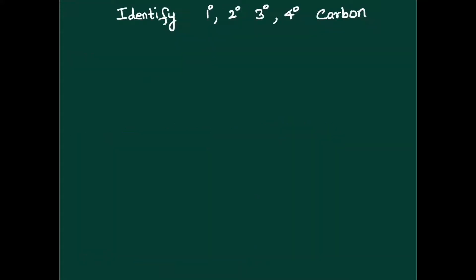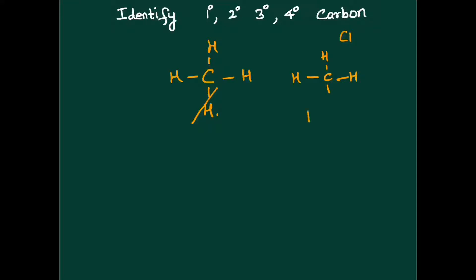The first basic compound of carbon is methane — CH₄. You remove a hydrogen from it and you get what is called a methyl group. This is how alkyls are formed, and this becomes our first basic alkyl group.